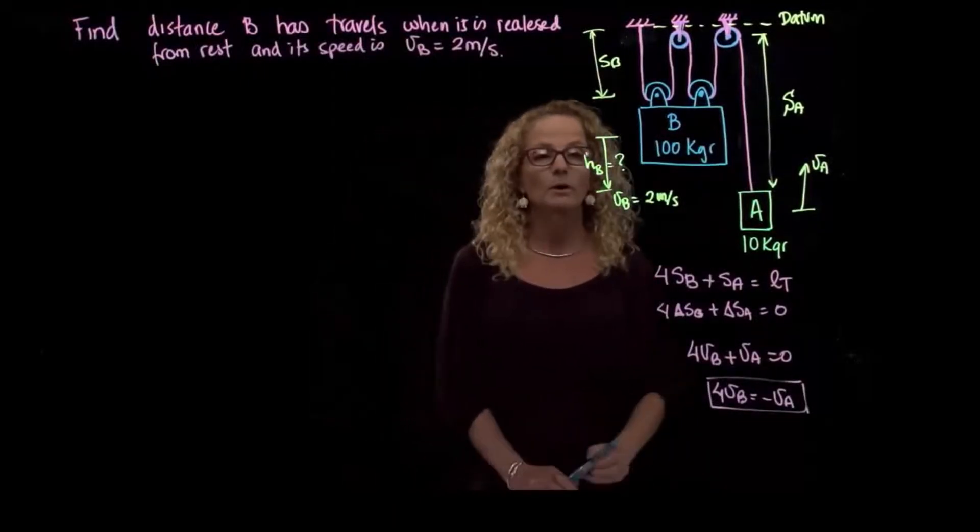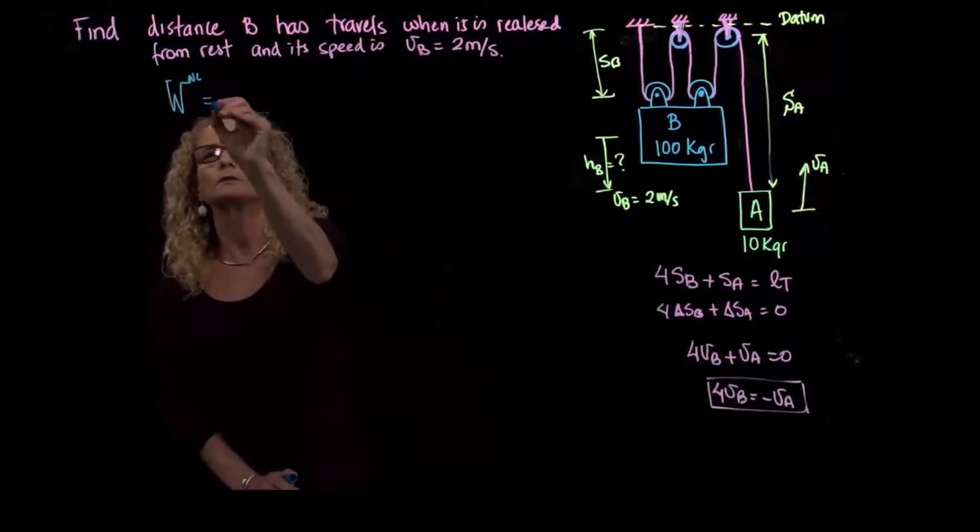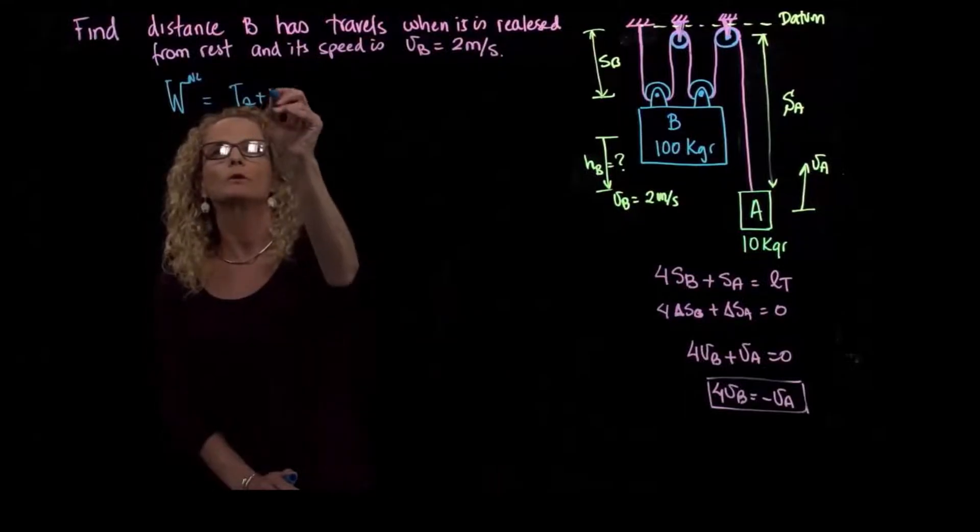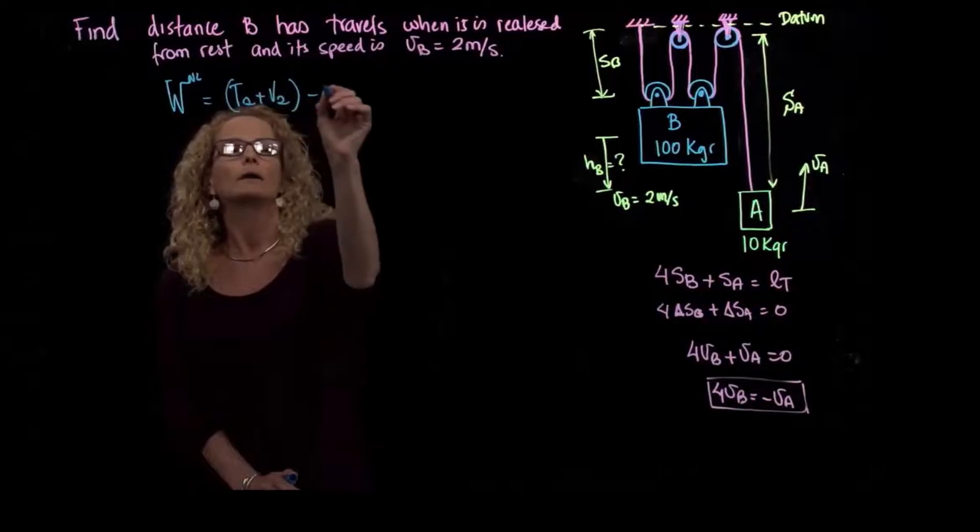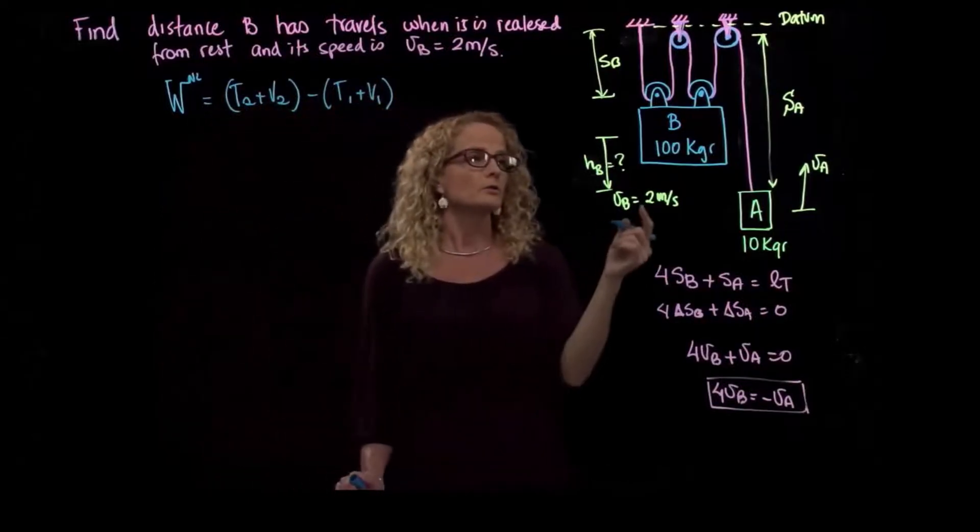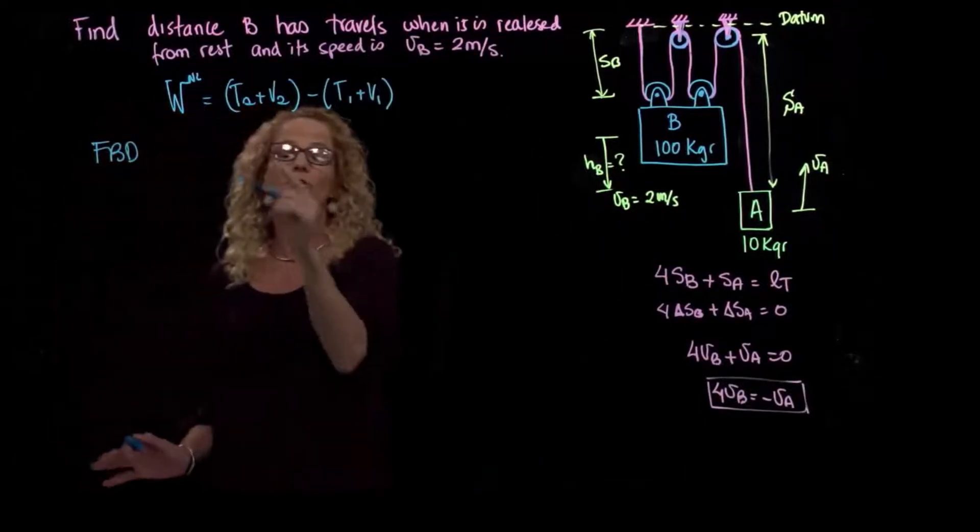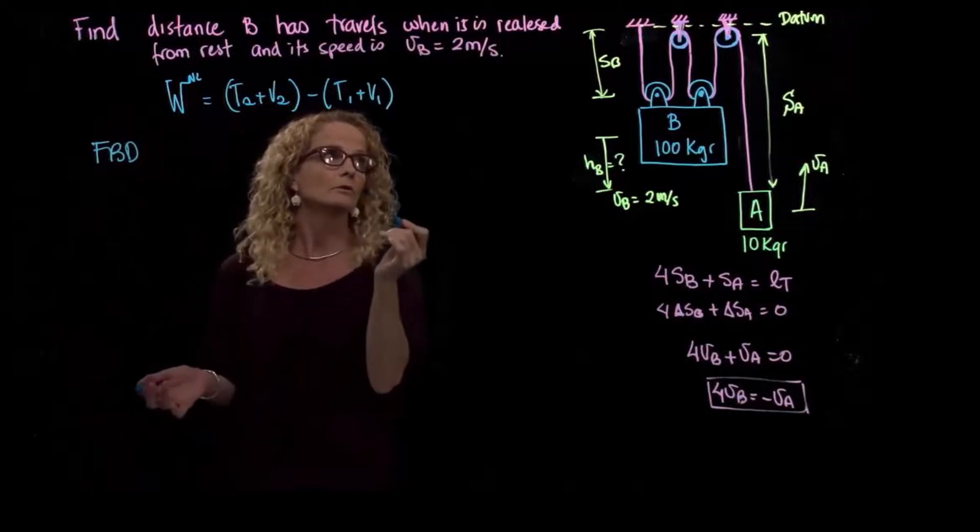The principle of work and energy, the way that I like to write it, is forces non-conservative forces equals to T2 plus V2 minus T1 plus V1. What forces do we have here? Let's do the free body diagram of the whole system, just to know if we have any non-conservative forces that we have to take into consideration.